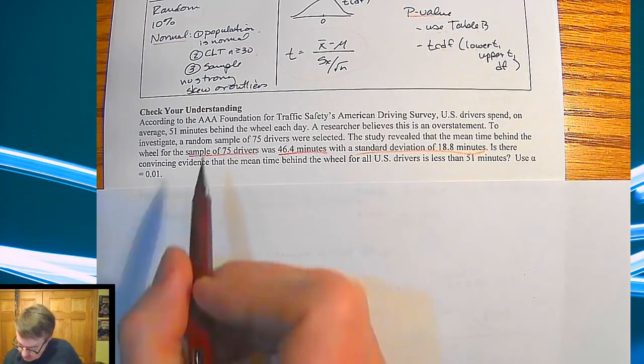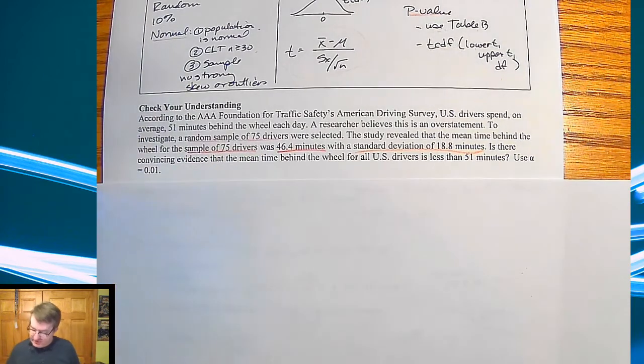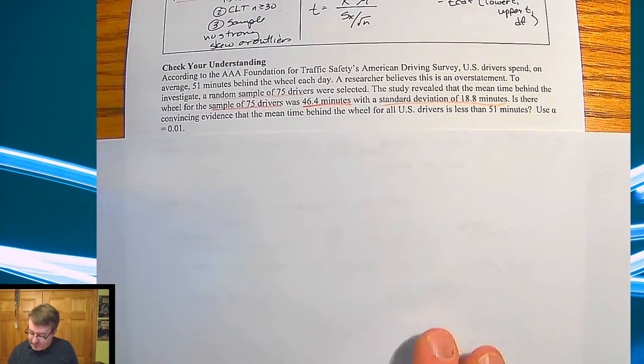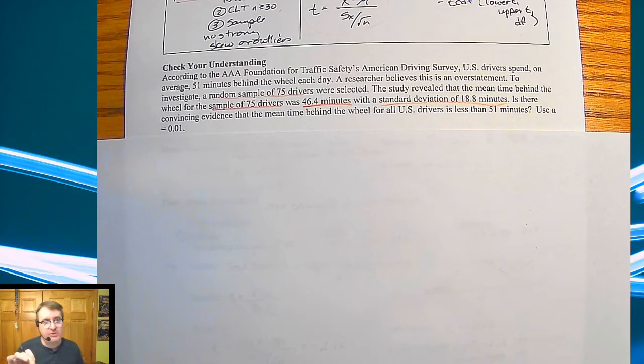Oh, and it does say random sample of 75 drivers. So does this convincing evidence that the mean time for all U.S. drivers is actually less than 51 minutes? And you're going to use an alpha value of 1%. So go ahead and hit pause, run through this, come on back and check as we go.